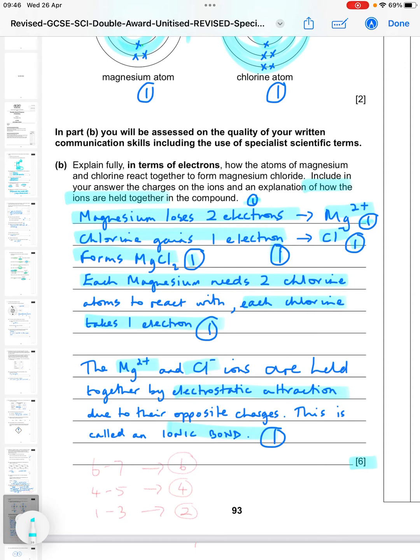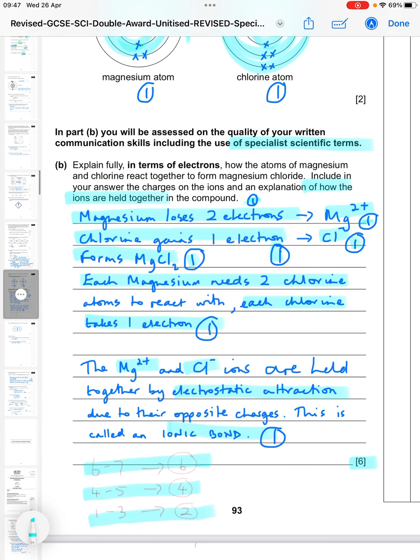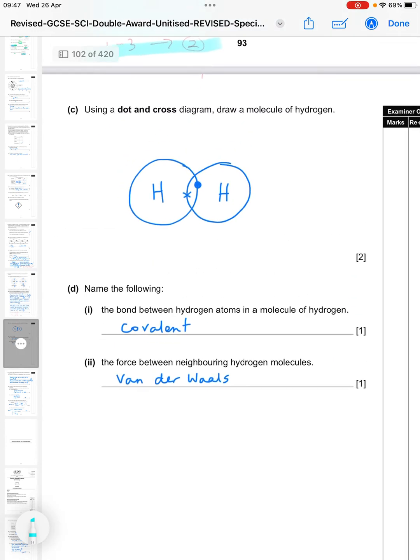Then forms MgCl2, that's the formula, which again is worth a point. And then if you said that each magnesium needs two chlorine atoms to react with it, so each chlorine takes one electron, that's another point. And then the final part is for saying how the ions are held together in the compound. So the Mg2+ and Cl- ions are held together by electrostatic attraction due to their opposite charges, and this is an ionic bond. That's going to give you another point. Now this is worth six marks, and the way these are marked, the mark scheme gives you indicative points. So to get six marks, which would be the top band, you need to get six or seven of those points. Four or five points would put you on four marks, and one to three would put you on two. The second mark in each of those brackets is dependent on your use of specialist scientific terms. So as long as you're using words like ion and electron, you're going to hit that top mark.